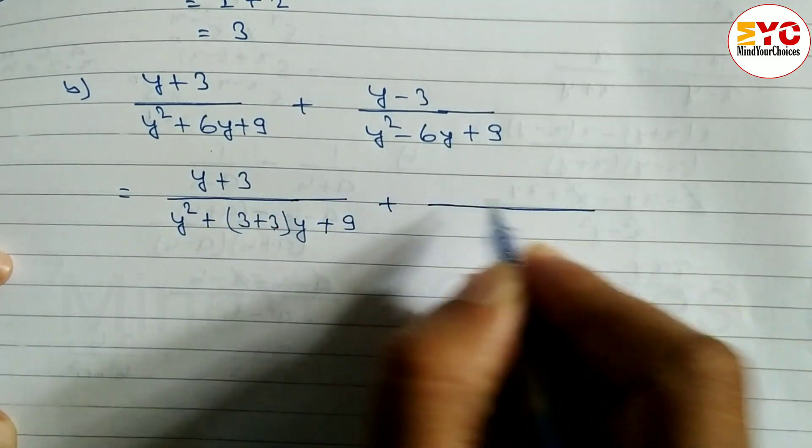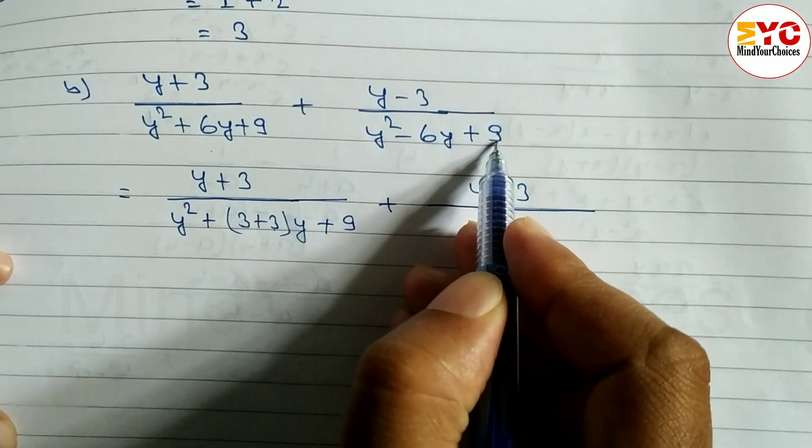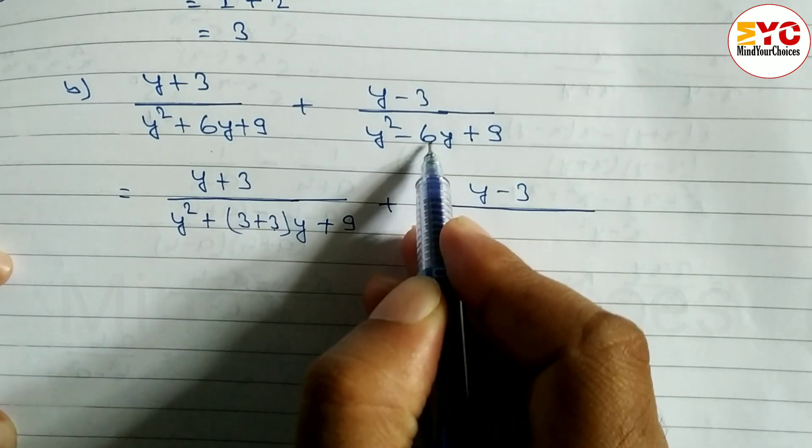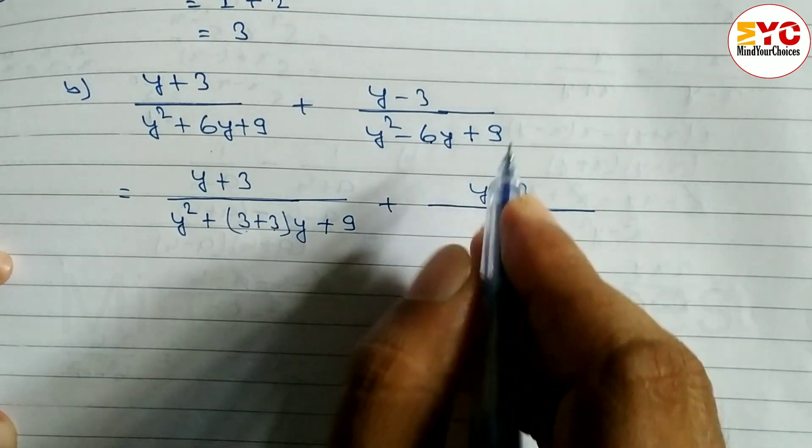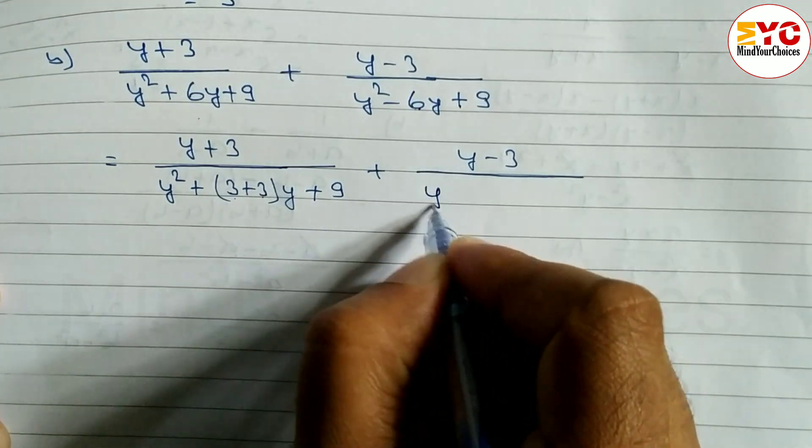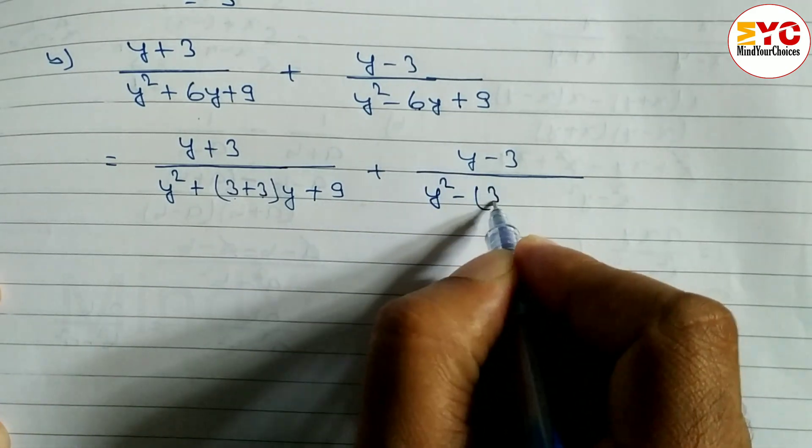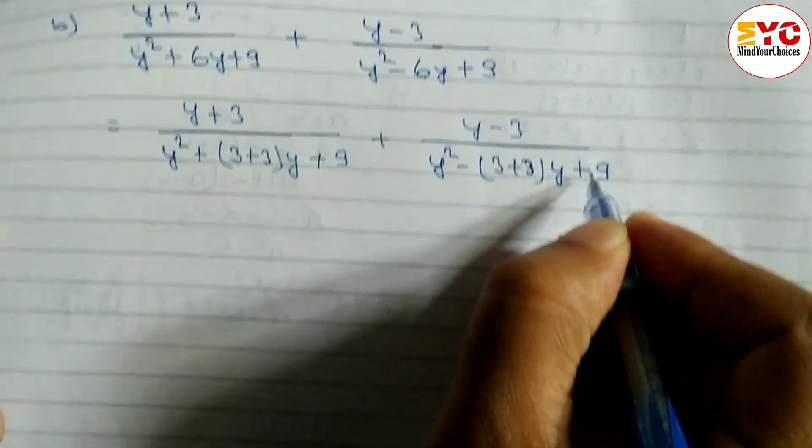This side is the same. y minus 3 over - we need numbers that multiply to give 9 and add to give 6. Same: 3 plus 3 equals 6, 3 times 3 equals 9. So we can write here y square minus 6, that's 3 plus 3, then y from y square, plus 9.